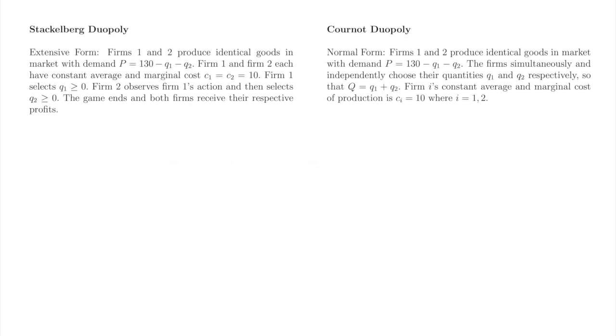We've found the subgame perfect Nash equilibrium and equilibrium path of play in Stackelberg duopoly, and interpreted the game and players as a sequence of monopolists. Now we'll compare Stackelberg and Cournot duopoly, since they are both games in which competing firms select quantities. First, let's look at the games side by side.